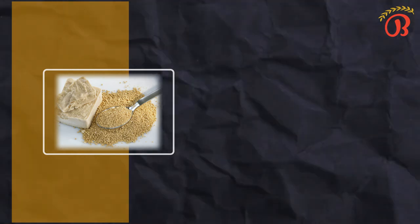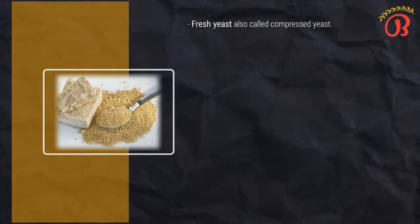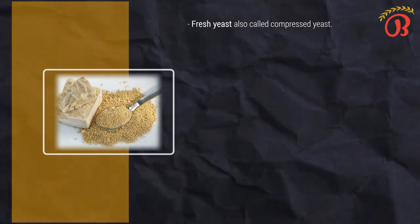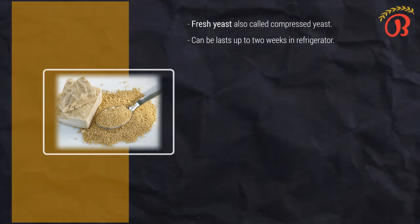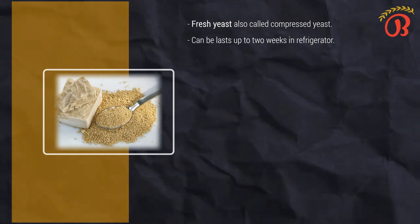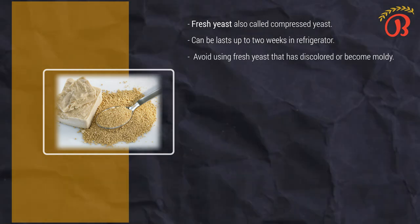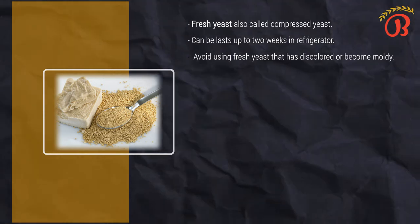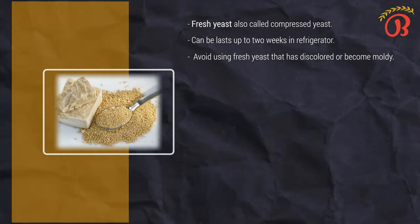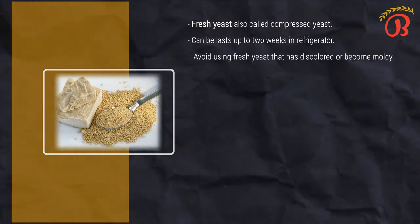Now let's talk about types of yeast. First is fresh yeast, also called compressed yeast, which is moist and perishable. Under refrigeration and carefully wrapped to avoid drying, fresh yeast lasts up to two weeks. For longer storage, it may be frozen. Avoid using fresh yeast that has discolored or become moldy. Some bakers crumble fresh yeast and add it directly to the dough in the straight dough process. However, the yeast is mixed more evenly into the dough if it is softened in twice its weight of warm water.